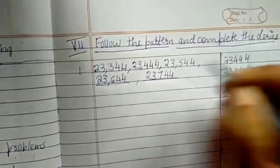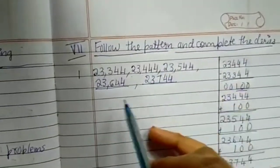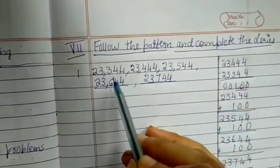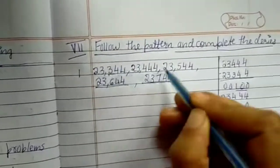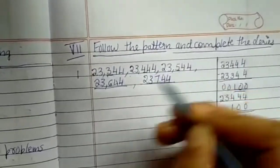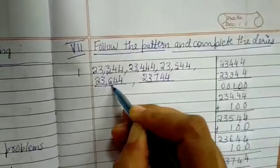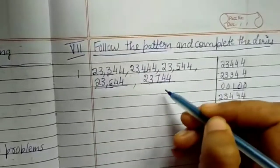Here, 100 is added to every number to get the next answer. Only the digit in the hundreds place changes; the rest of the numbers are similar.